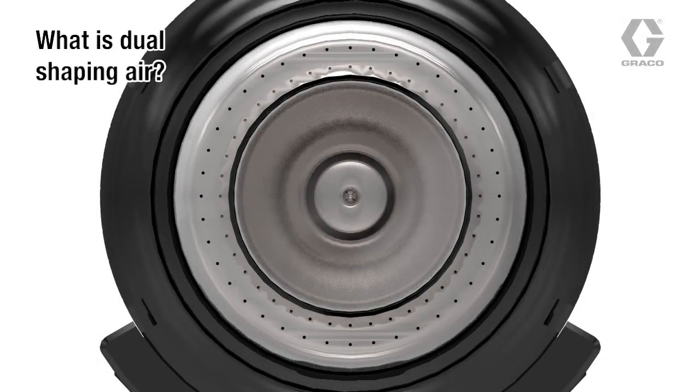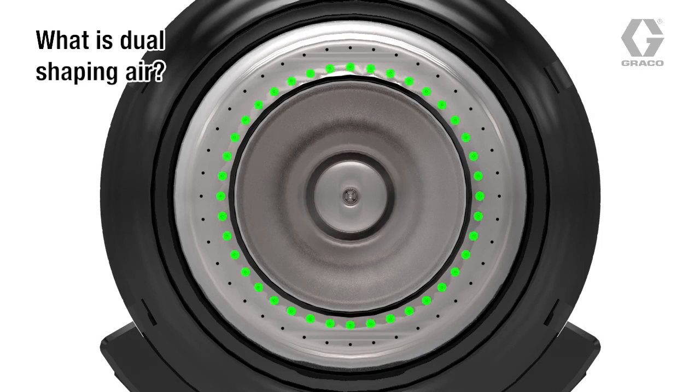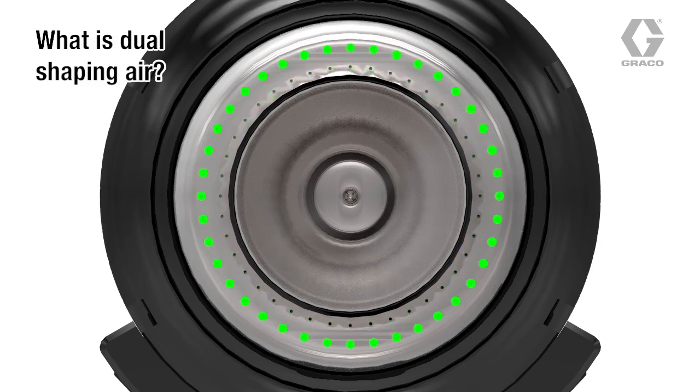Dual Shaping Air involves two rings of passages that surround the bell cup at the front of the applicator. Air from the inner ring and air from the outer ring differently affect the paint as it flows from the edges of the bell cup.